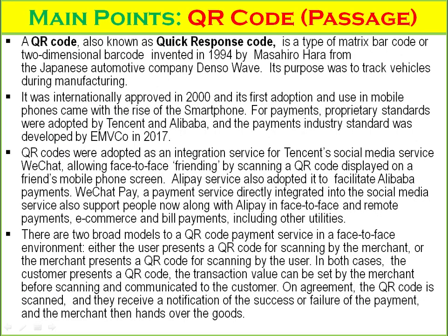The main points of the QR code chapter: A QR code, also known as Quick Response Code, is a type of matrix barcode or two-dimensional barcode invented in 1995 by Masahiro Hara from the Japanese automotive company Denso Web. Its purpose was to track vehicles during manufacturing. It was internationally approved in 2000. Its first adoption and use in mobile phones came with the rise of smartphones.